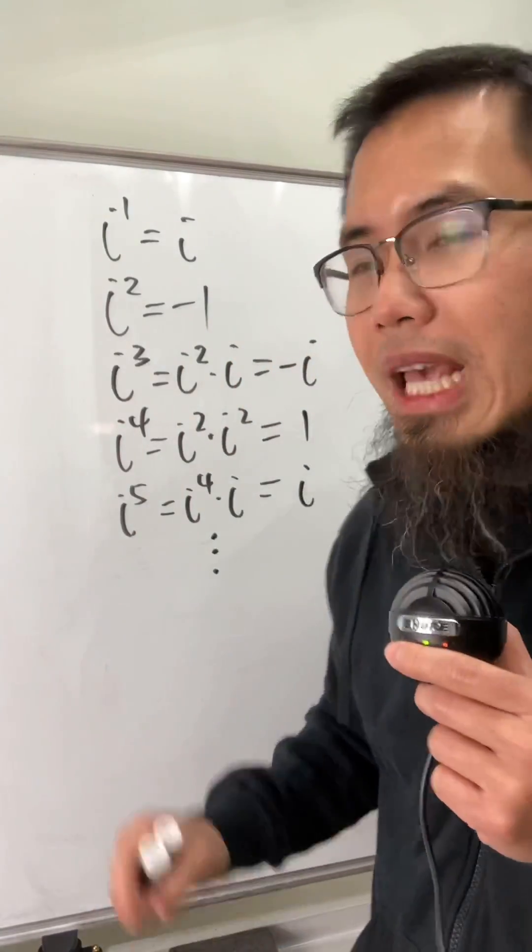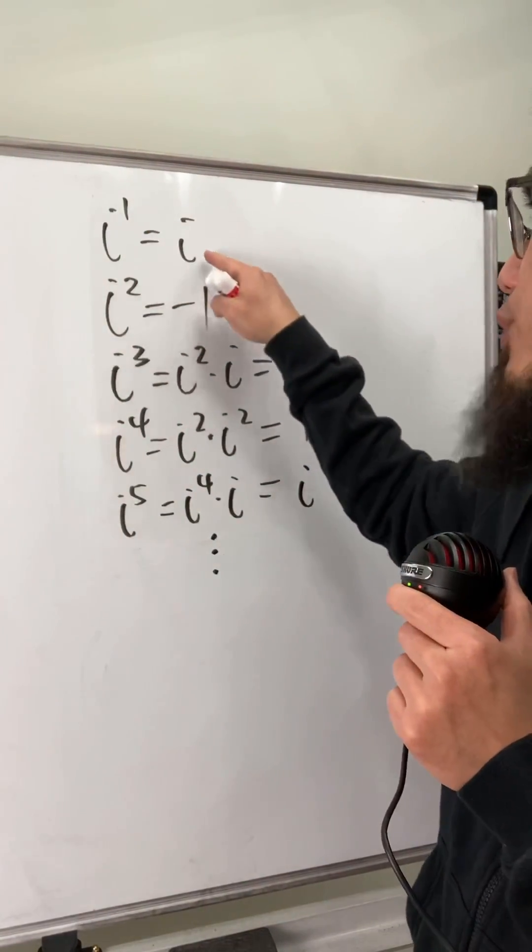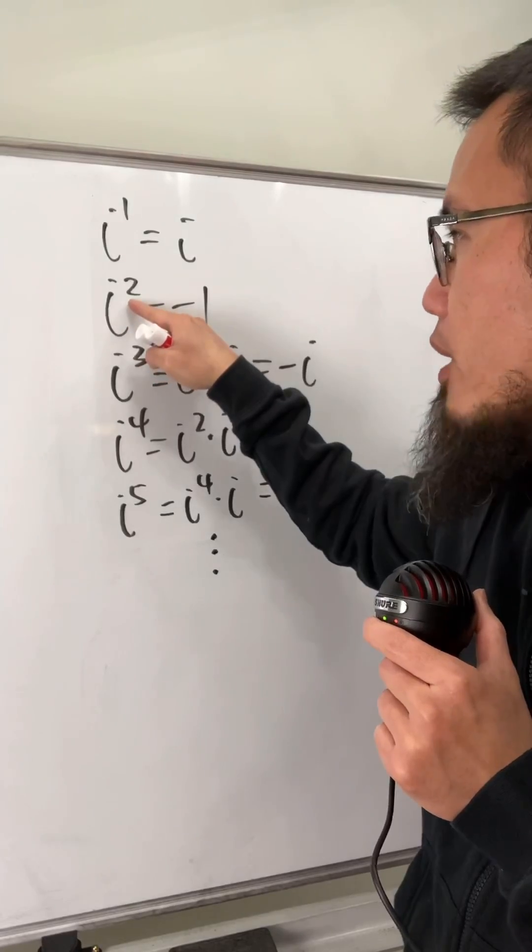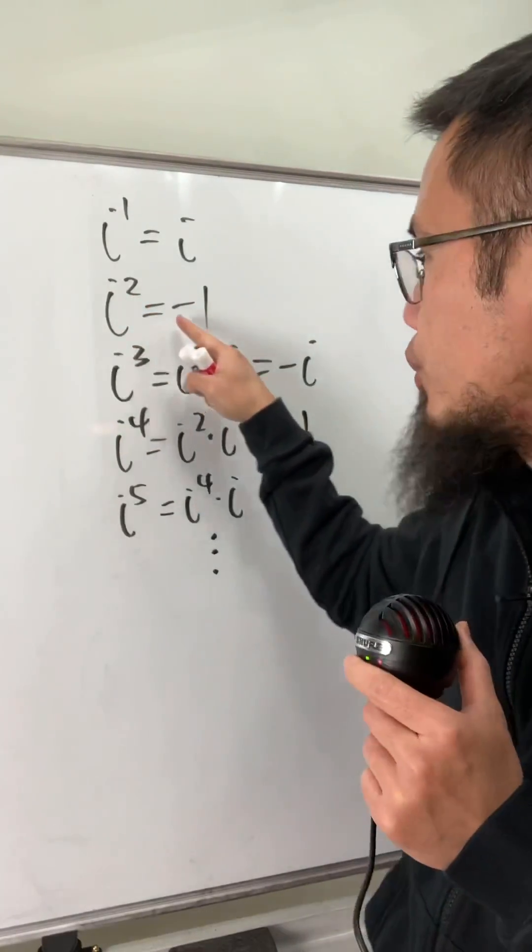I have a question for you. When we have i to the first power, well, that's just equal to i. And when we have i squared, then by definition, this right here is equal to negative 1.